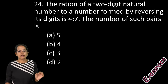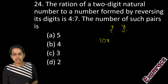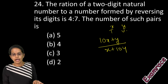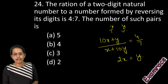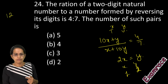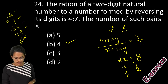The next question is on the ratio of a two-digit natural number. Let the tens digit be x and units digit be y. The number is (10x + y) and reversed is (x + 10y), with ratio 4:7. Simplifying gives 2x = y. So when x = 1, y = 2 giving 12; x = 2, y = 4 giving 24; then 36 and 48. We can't use x = 5 because y = 10 is not a single digit. So there are 4 valid pairs.